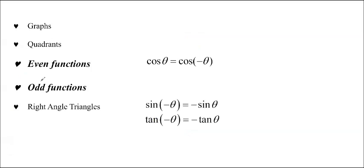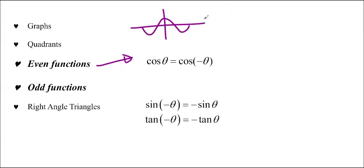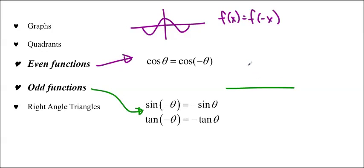The next way is using even functions and odd functions. Cos is an even function — it's symmetric on either side. The definition of an even function is f(x) equals f(negative x), so cos theta equals cos of negative theta. Sine theta and tan theta are both odd functions. Sine looks like this and repeats itself — you can see it's the same in the diagonal.